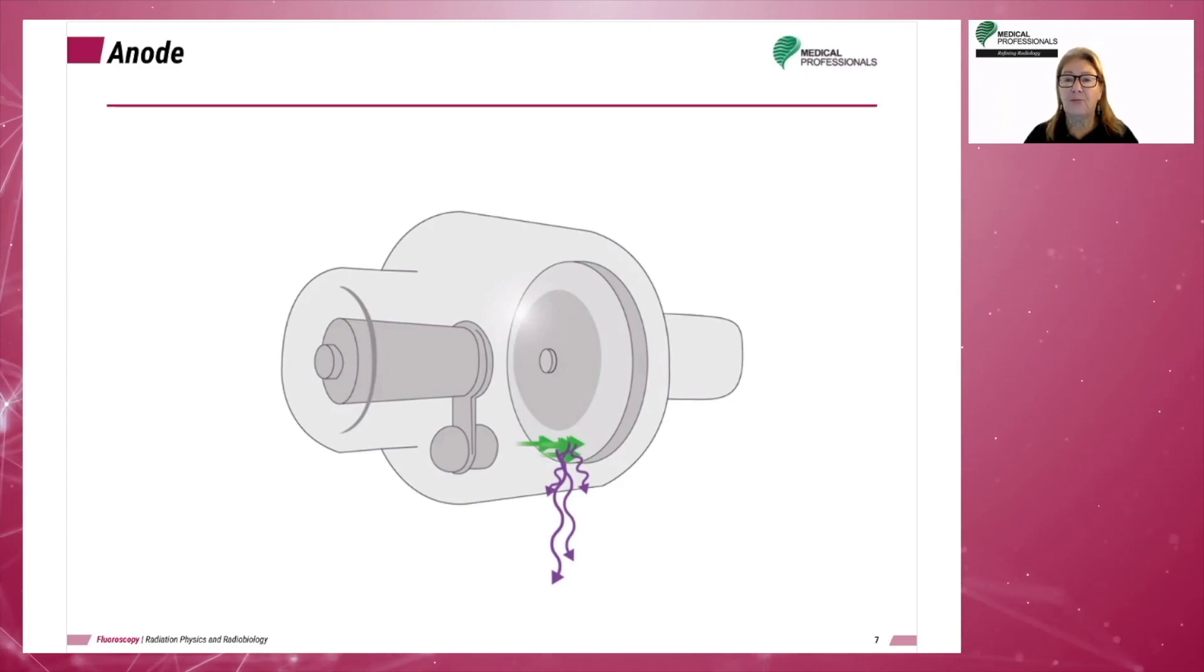The high melting point is essential because of the amount of heat generated during X-ray production. And the high atomic number is essential so that the electrons produce X-ray photons in the range required for diagnostic imaging. Now we have an electron cloud boiling off at the filament, being held in place by the focusing cup at the negative end of the tube, and the rotating tungsten target at the positive end of the tube.